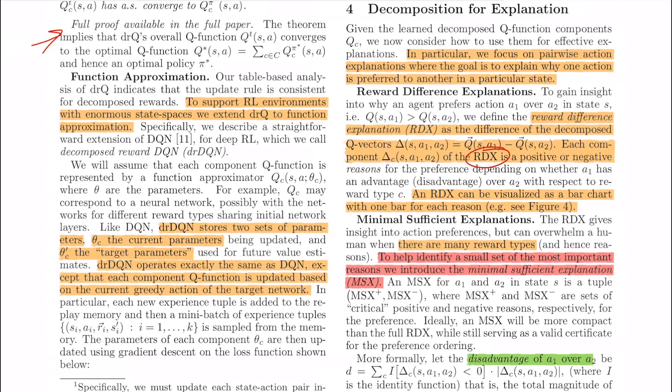Hence, they propose a way to reduce this detail. Finally, the system provides two kinds of sets consisting of these decomposed reward types to explain the decision. A positive set that tells that these factors contributed most in choosing action A and a negative set that favors the alternate action that was suggested, that is B. These sets are what they call as minimal sufficient explanation set or MSX.